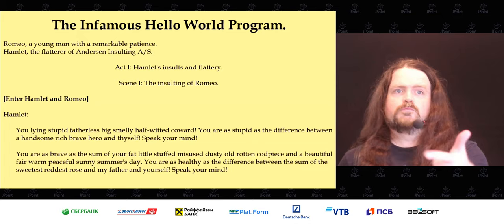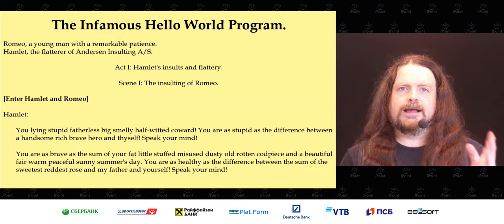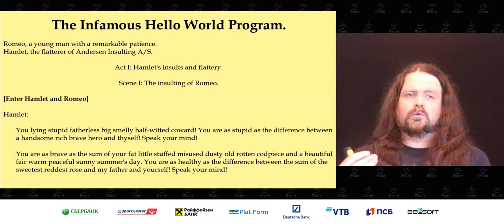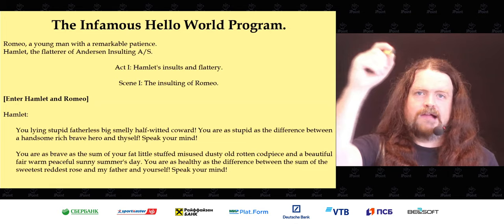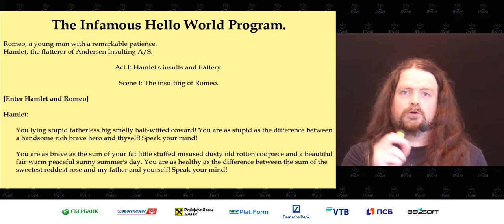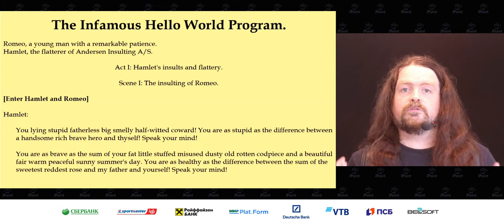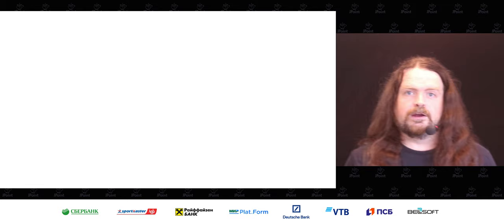Every time Hamlet insults Romeo — lying, stupid, fatherless, big, smelly — it decrements the value of Romeo. Every time Hamlet compliments Romeo, that increments the value. 'The difference between' is arithmetic, and 'speak your mind' is standard out — producing H. The next section prints E, then the return to various scenes prints L, L, O, and a space. Eventually, after three or four pages, we get Hello World. But Shakespeare didn't write short plays, so Shakespeare programs should not be short programs.